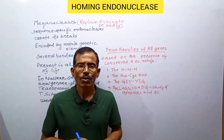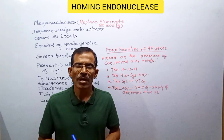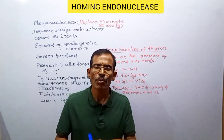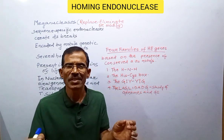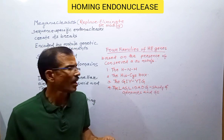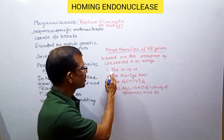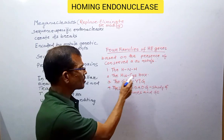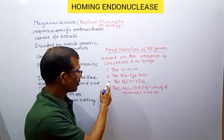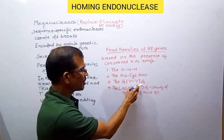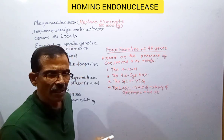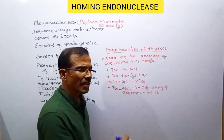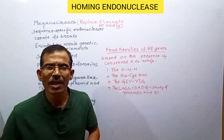Based on the presence of conserved amino acid motifs, four families of homing endonucleases have been proposed. These families are: first, the H-N-H family; second, the His-Cys box; third, the GIY-YIG family; and fourth, the LAGLIDADG family of homing endonucleases.